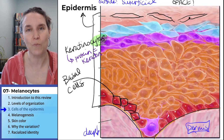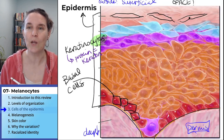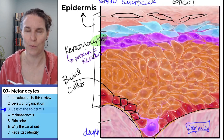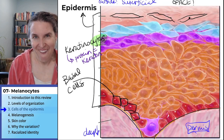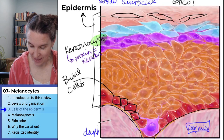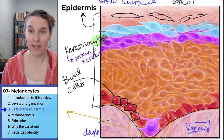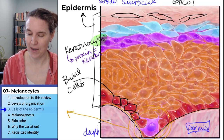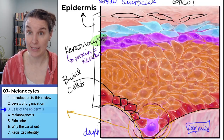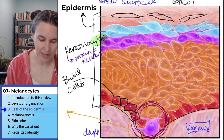They produce that protein, keratin, in the process. Let's see if I can circle it in — that, my friends, is our melanocyte.